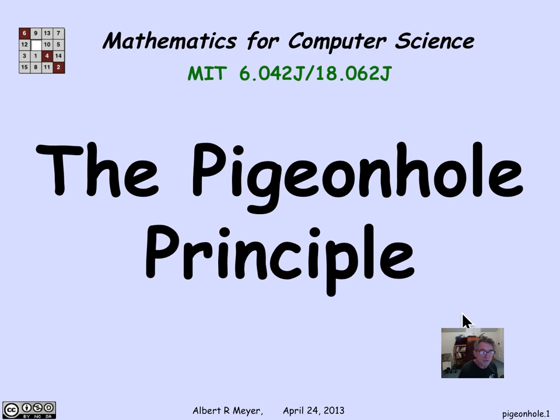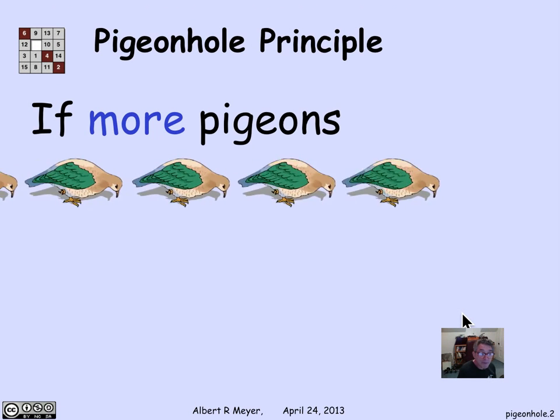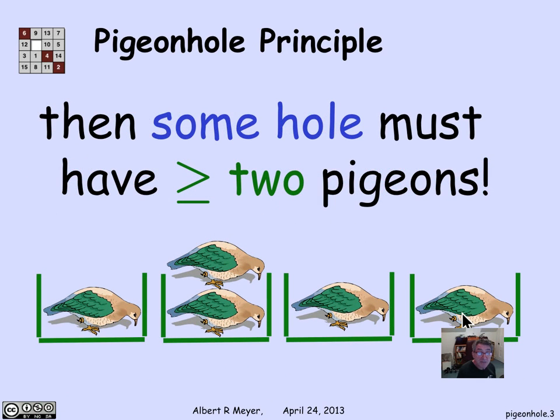The pigeonhole principle is a counting principle that's so obvious that you may not have noticed that you're using it. In simple form, it says that if there are more pigeons than pigeonholes, then you have to have at least two pigeons in the same hole.